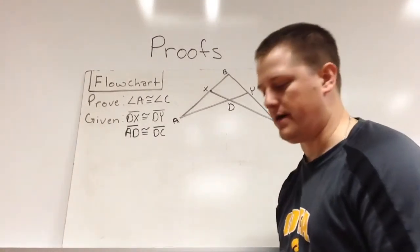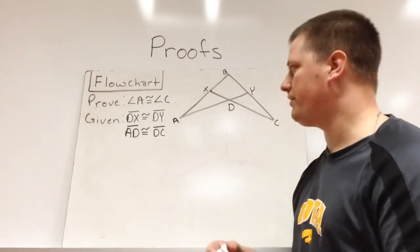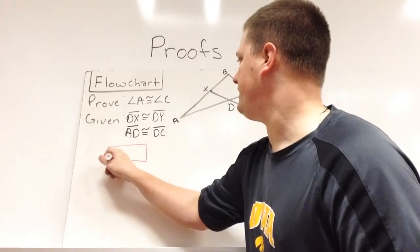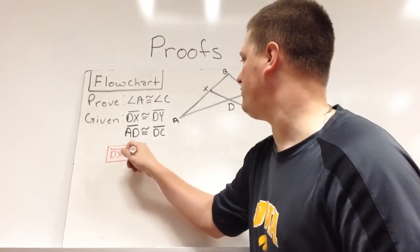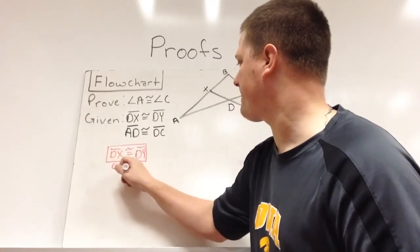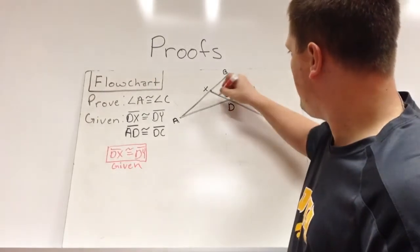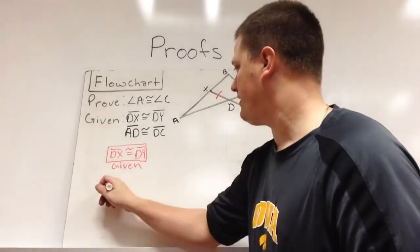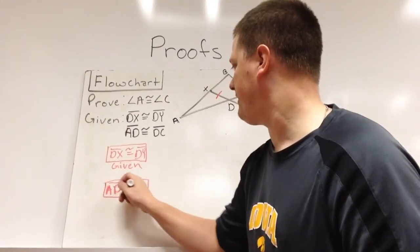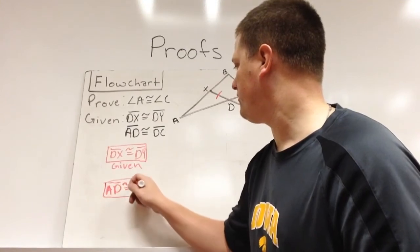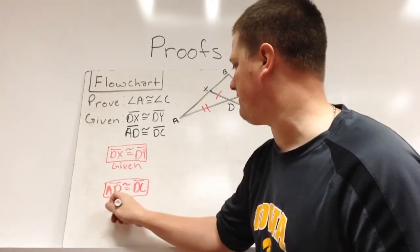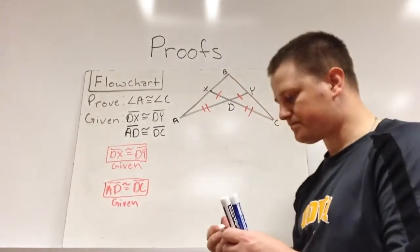Similar proof, I'm just going to show you how the flowchart works within this. So again, we want to start with all our givens. So we have DX is congruent to DY. And that's given. Then we also have AD is congruent to DC. And again, that's given.